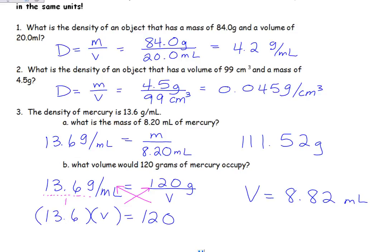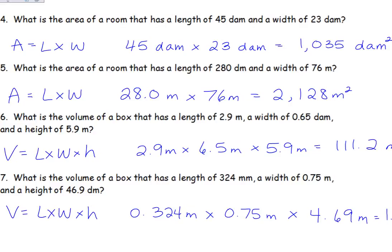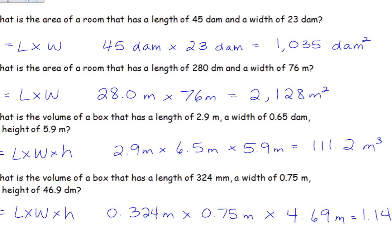The other ones have some areas and some volumes. If you have something like number 4, where your units are the same, they're both decameters. Excellent. Length times width, you're done. Your unit, which mine's kind of hidden. Let's see if I can find it. There it is. Should be decameter squared.